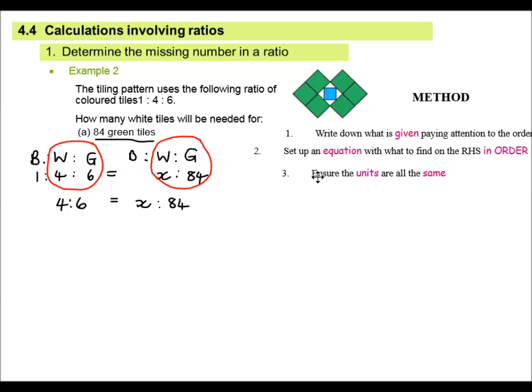I cannot stress enough times to make sure that your order is correct. Ensure that the units are the same. In this case, these are all tiles. But when we start using length and liquid, you've got to make sure that all your units are in the same form. For example, centimeters or liters or grams. Make sure that your units are the same. I'm going to write each side as a fraction. That is the next step. So I will have 4 over 6, white over green. I then cross multiply. I always look for my x. 6 multiplied by x is 6x. 4 multiplied by 84 is 336.